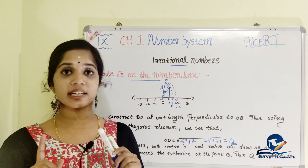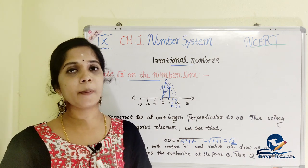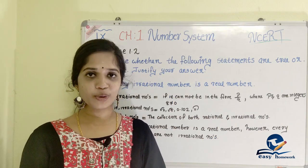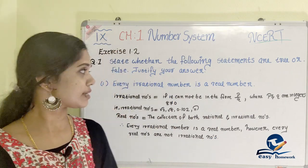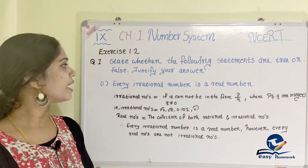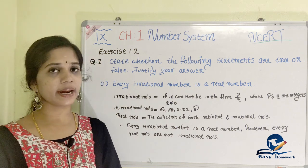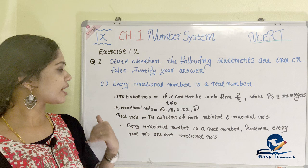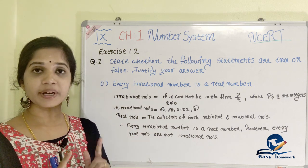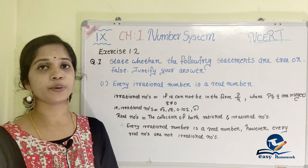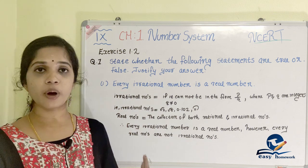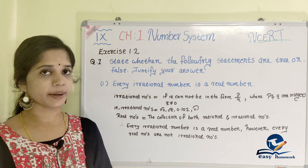Now let's go to exercise 1.2. Let's solve the questions. The first question in exercise 1.2 is: State whether the following statements are true or false and justify your answer. We have three statements to check — determine if each is true or false and then construct the answer.